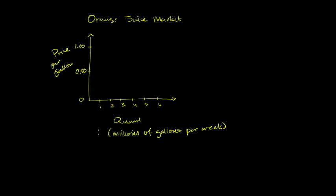I'm going to simplify relative to the last video. The short-term supply curve for the orange juice market looks something like this. To get producers to make even the first gallon, they need about 20 cents. Each incremental gallon requires more money — the marginal cost for the market as a whole keeps rising, as oranges must be sourced and transported from further and further away. So this supply curve is also the marginal cost curve.